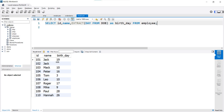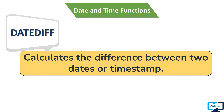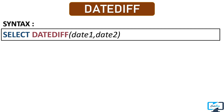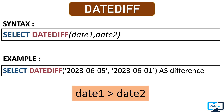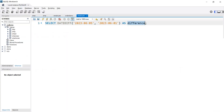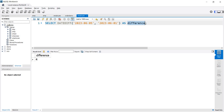After EXTRACT, our next function is DATEDIFF. This function returns the difference between two dates or timestamps. We pass two dates or datetime expressions to this function. Always remember that date1 should be greater than date2, otherwise you will get a negative result. Executing this example query, our output is 4 which is the correct output. Using this function you can get the difference between two dates or datetime expressions.